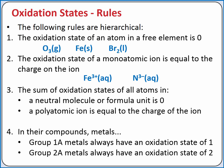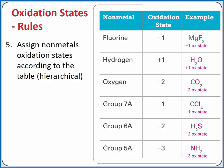The fourth most important rule is that in their compounds, Group 1A metals always have an oxidation state of +1, and Group 2A metals always have an oxidation state of +2. Our last rule applies to nonmetals. We assign oxidation states to nonmetals according to a hierarchical table. First, fluorine is assigned −1. Then hydrogen is assigned +1. Then oxygen gets −2. Group 7A, the rest of the halogens, get −1. Then Group 6A gets −2. And then Group 5A gets −3.